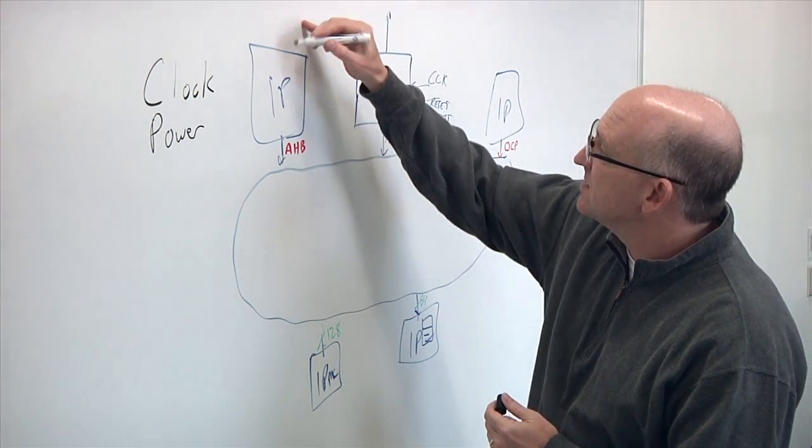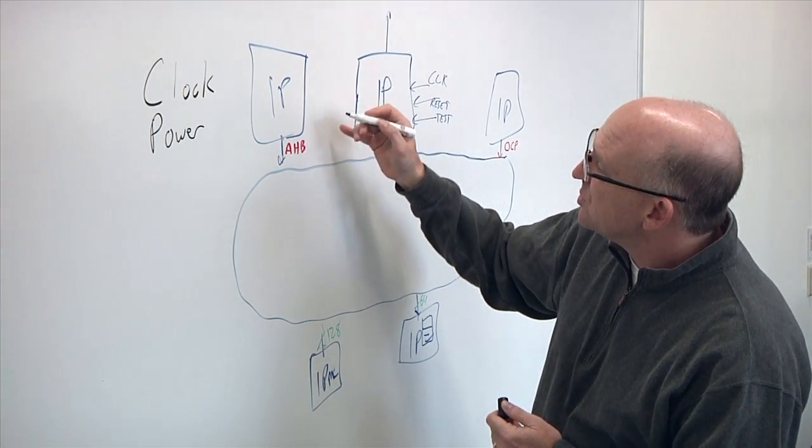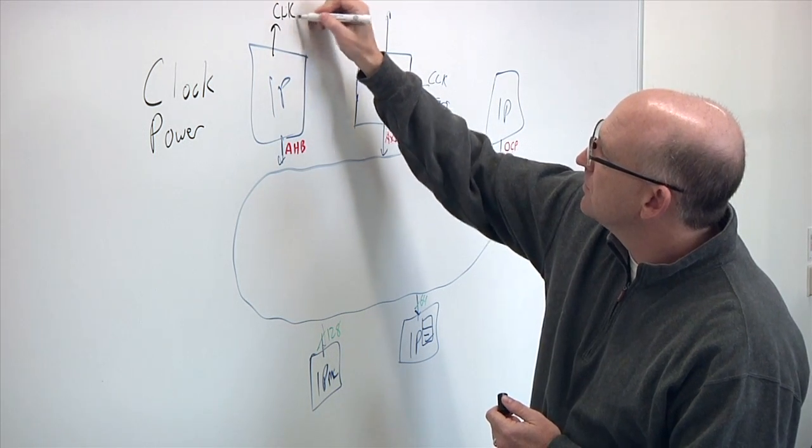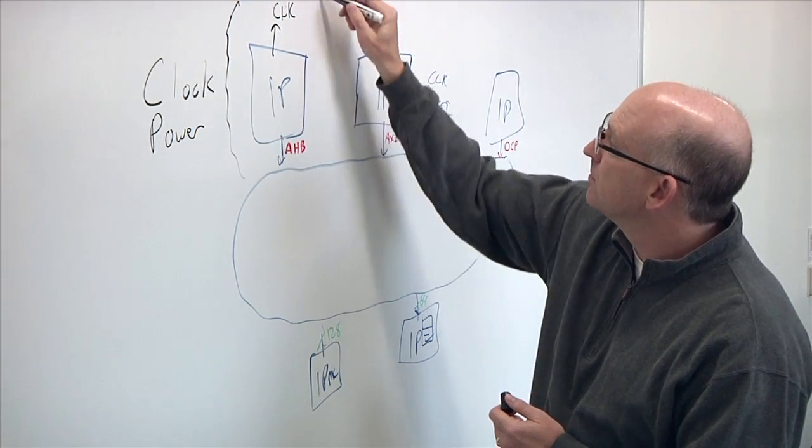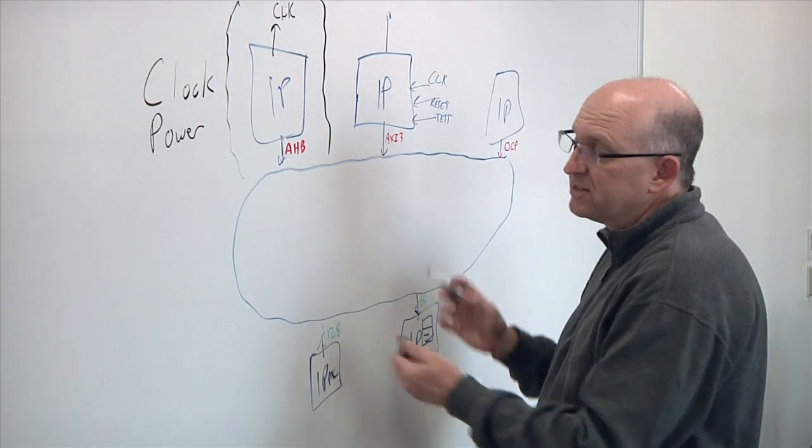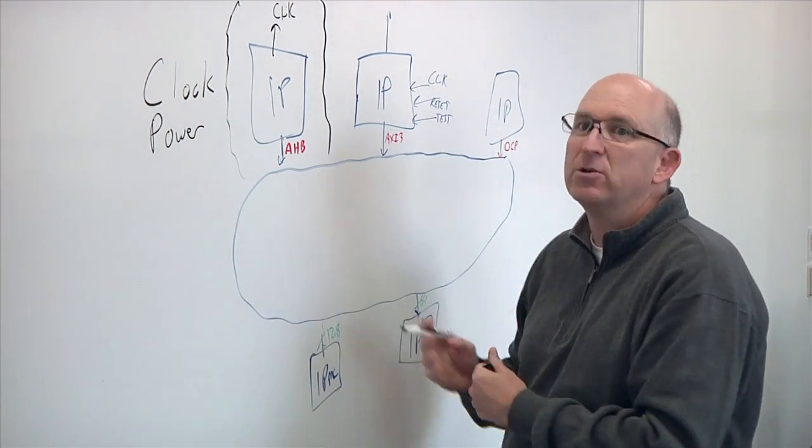We now see the requirement that these different components may each have their own clock. They may each be in their own power domain. And so now the on-chip network and the system integrators decide how in the world are we going to deal with all that.